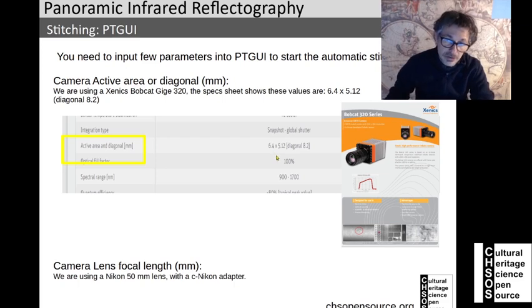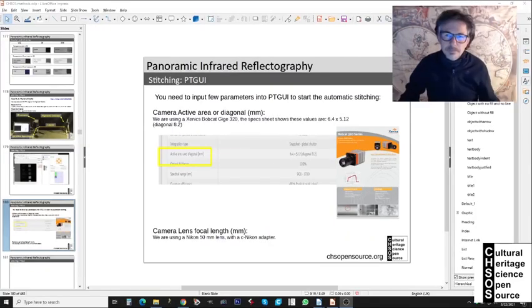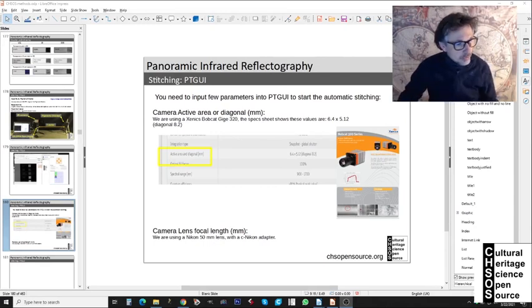We get all this information from the technical sheets of the camera. The software also needs to know the camera lens focal length. At this point we have everything we need to start the stitching, so we launch PTGUI.